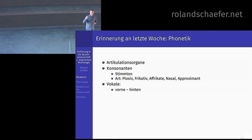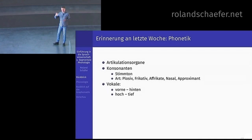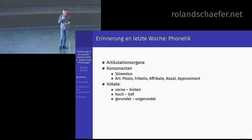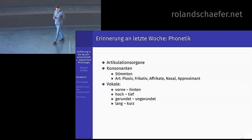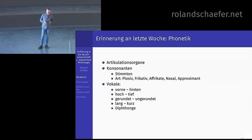Dann haben wir über Vokale geredet. Da ging es im Wesentlichen darum: vorne, hinten — die Zunge ist weiter vorne oder weiter hinten — oder weiter oben oder unten im Mundraum, und die Lippen sind gerundet oder nicht gerundet. Wenn Sie sich vor einen Spiegel stellen und ein U machen, dann zu einem I, sehen Sie sofort den Unterschied. Es gibt lange und kurze Vokale. Diphtonge sind einerseits wie lange Vokale, weil sie eigentlich zwei Vokale sind, die zu einem verbunden werden.